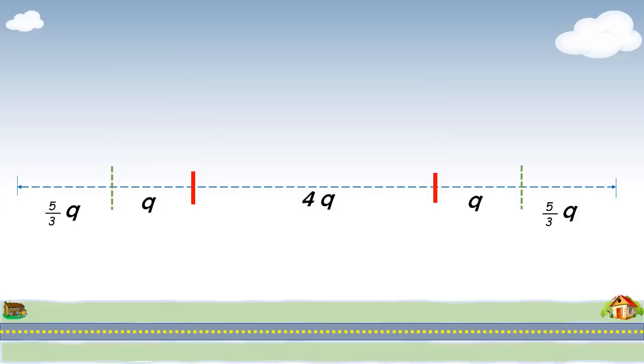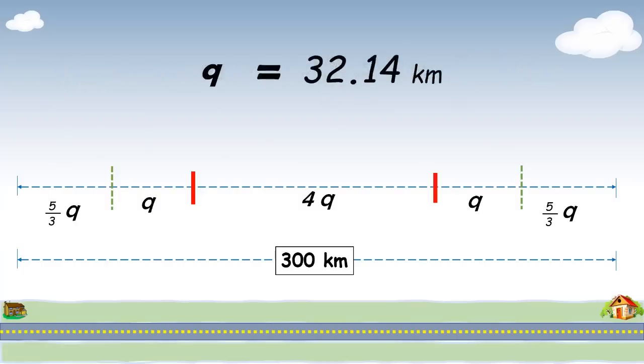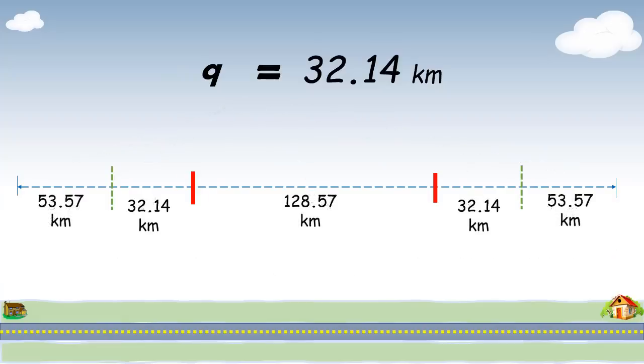The total distance is given as 300 kilometers. So, the addition of all these segments is equal to 300 kilometers. Simple calculation and we get the value of Q equal to 32.14 kilometers. Place the value of Q in these segments to get the actual distance of each segment.